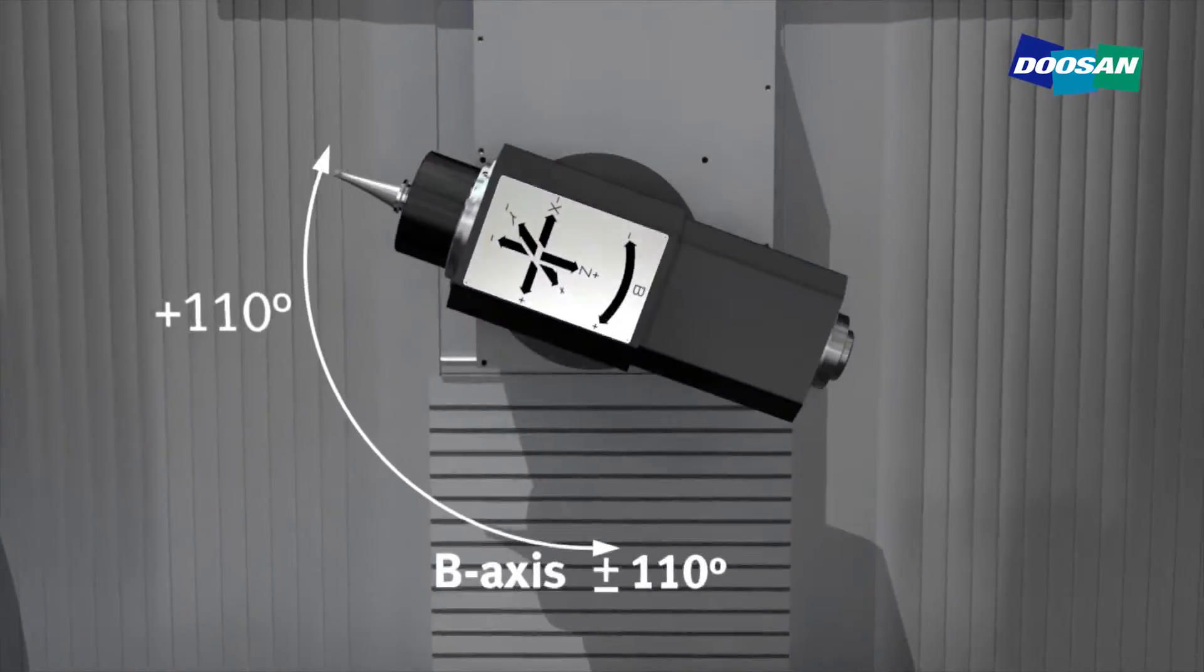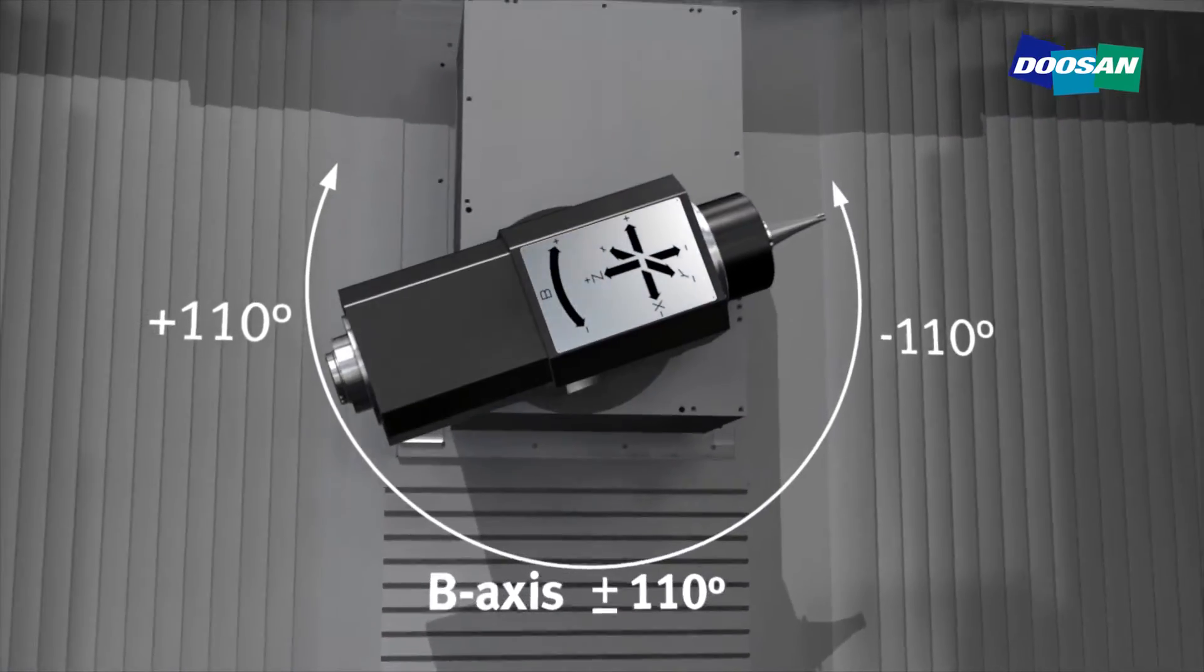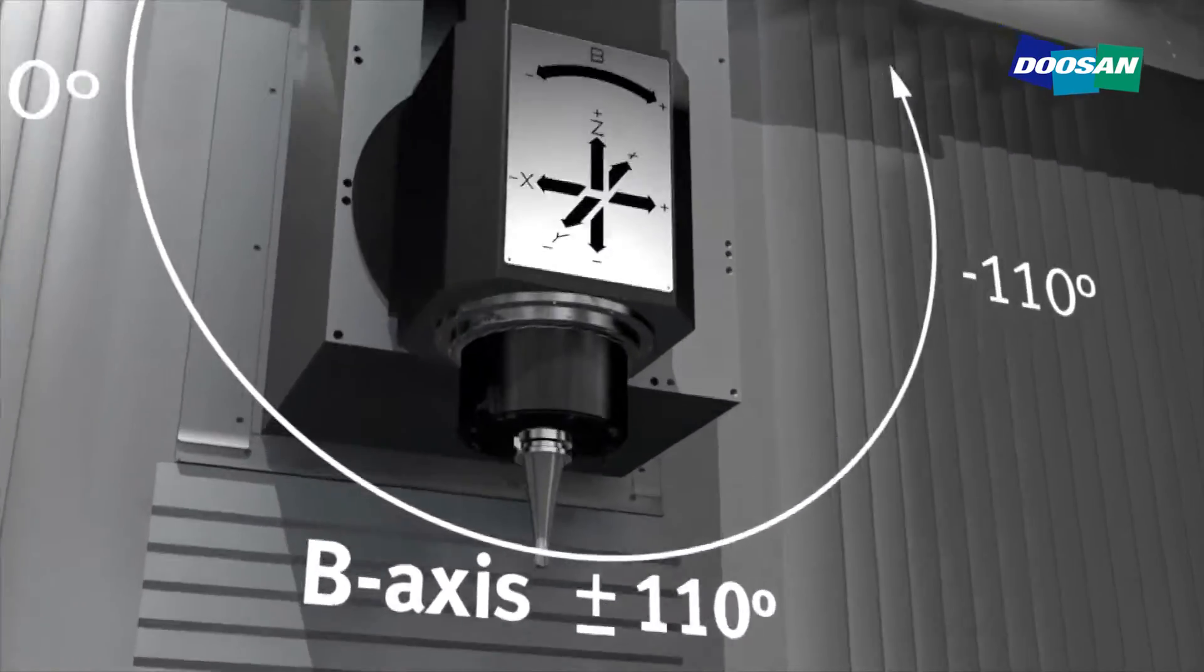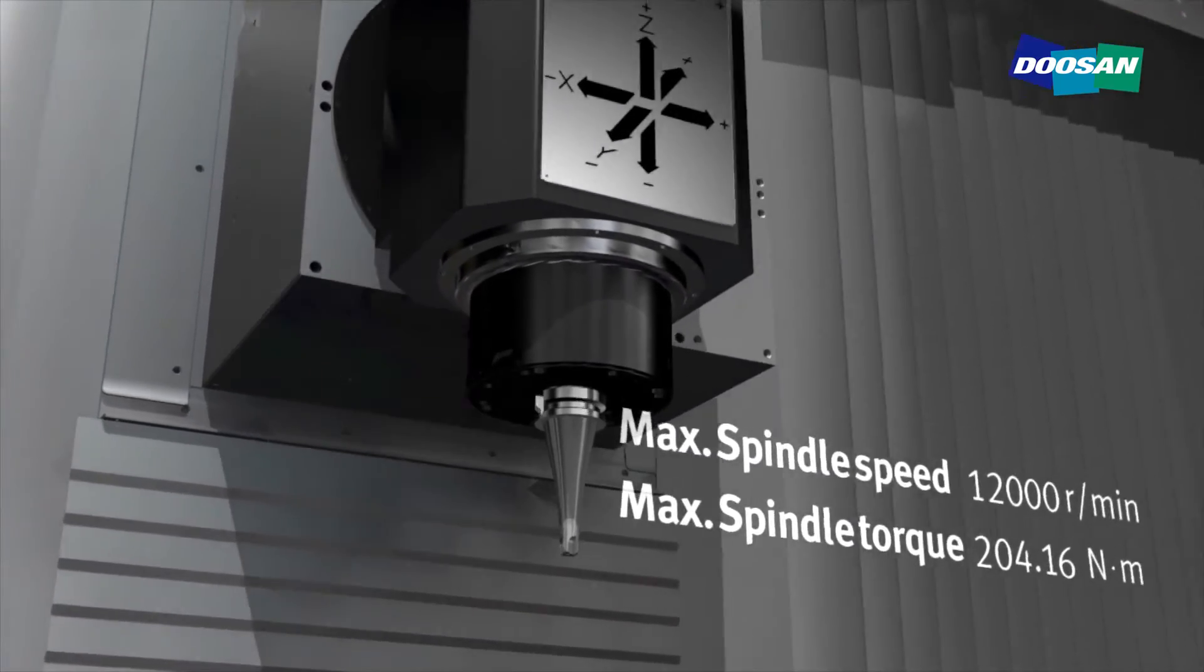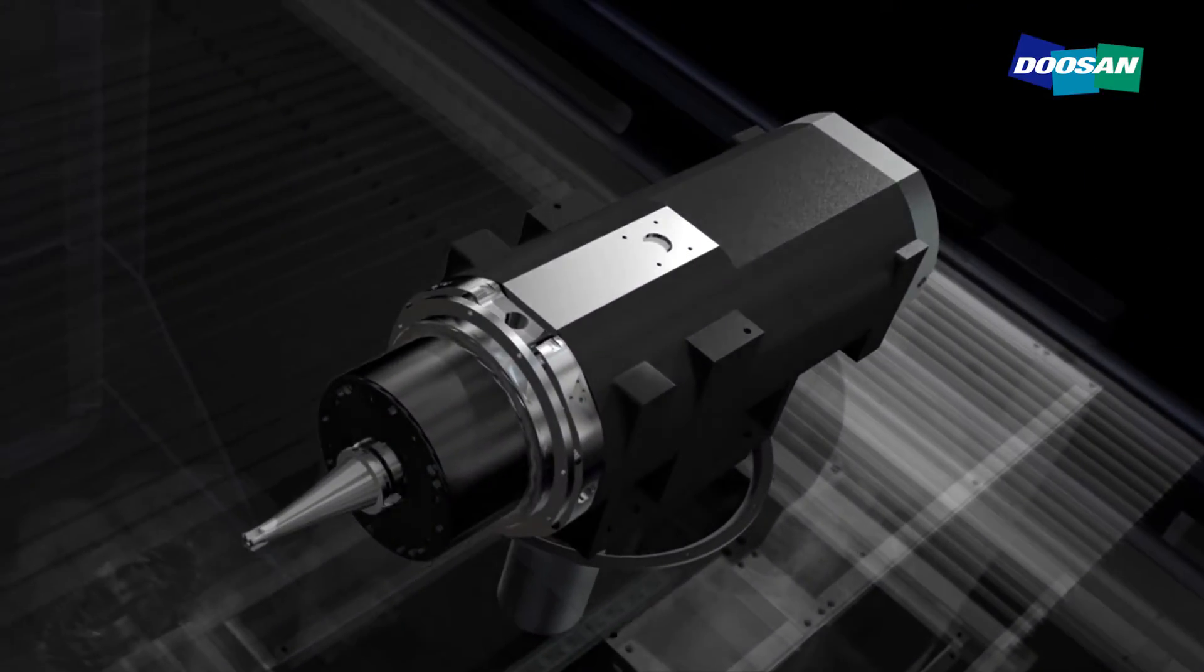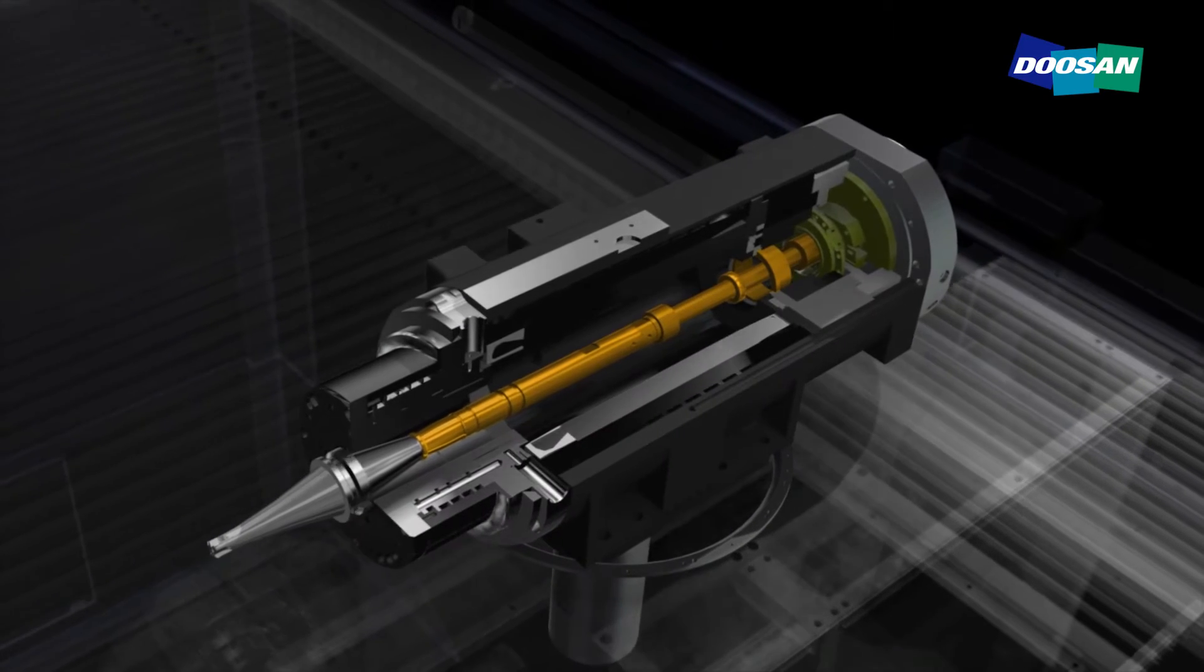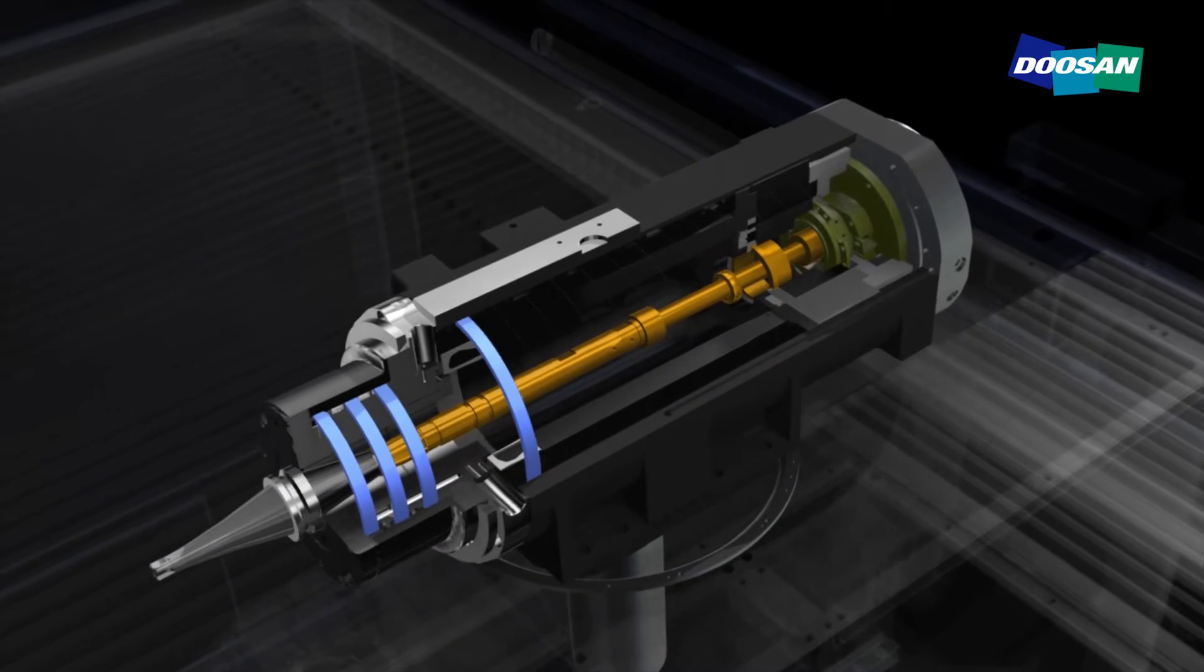The 110 degree rotation tilting head is optimized for a variety of machining processes and guarantees the highest speed and productivity. The built-in type spindle minimizes noise and vibration while raising operational reliability significantly.